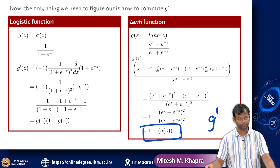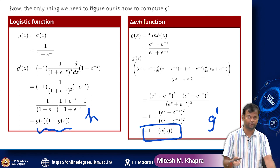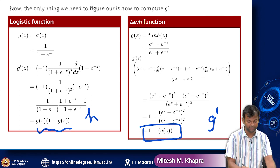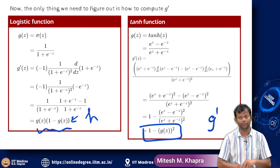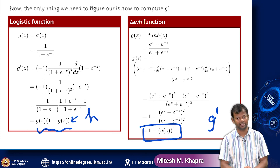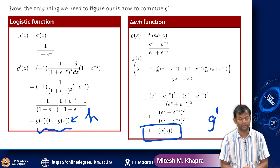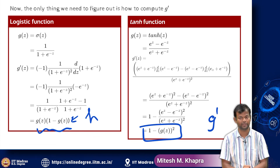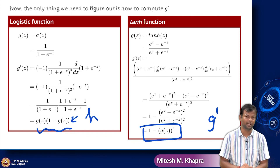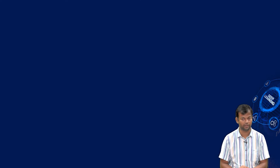So that is all. If you already have h and want to compute g-prime, you have everything needed. We are done with the entire backpropagation algorithm — we have seen it in quite gory detail. You may need to watch these videos a few times to get a complete grasp on it, but everything you need to understand it is there in the videos and slides. In the next class we will go back to gradient descent and look at a few variants of gradient descent. Thank you.